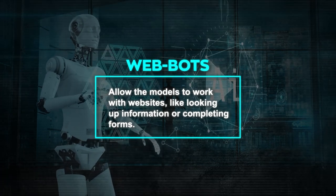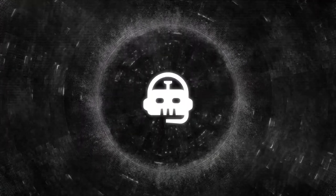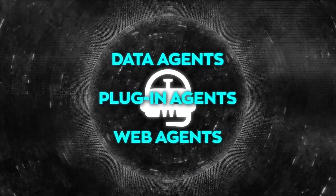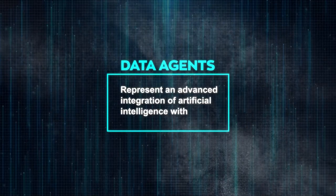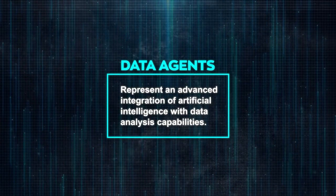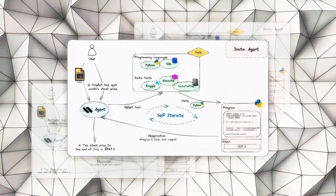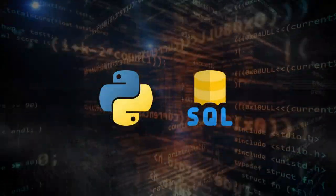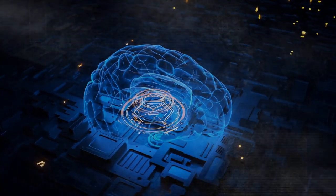OpenAgents offers three kinds of agents that use these features for different tasks: data agents, plugin agents, and web agents. Data agents represent an advanced integration of artificial intelligence with data analysis capabilities. These agents are designed to assist in comprehending and processing vast amounts of data, and they proficiently utilize technical languages such as Python and SQL to interpret data.